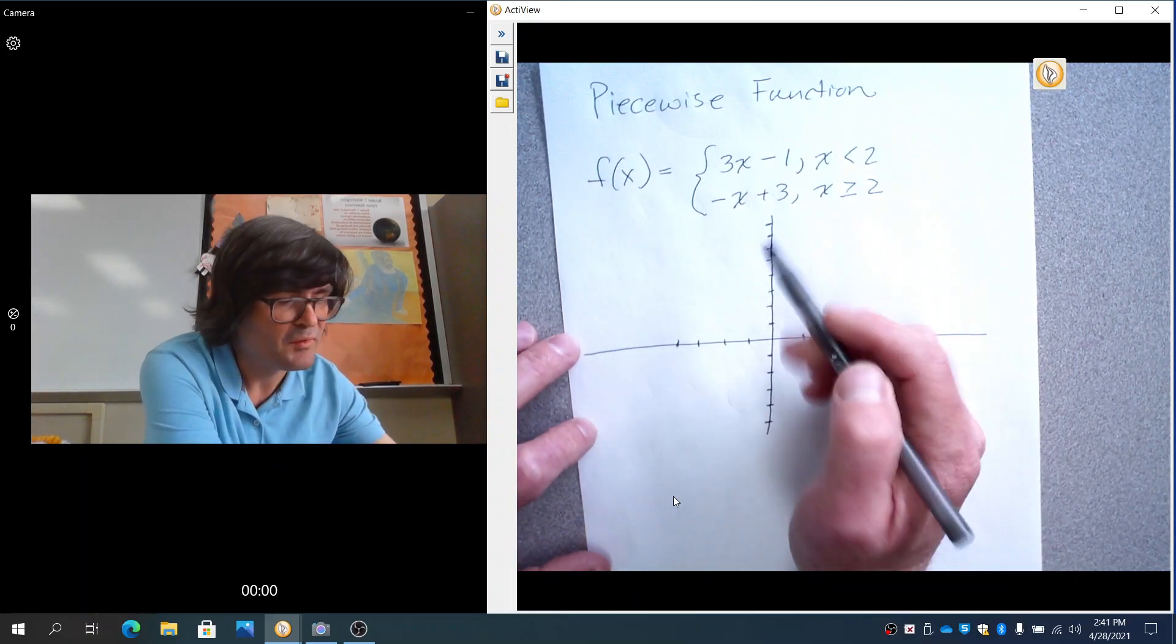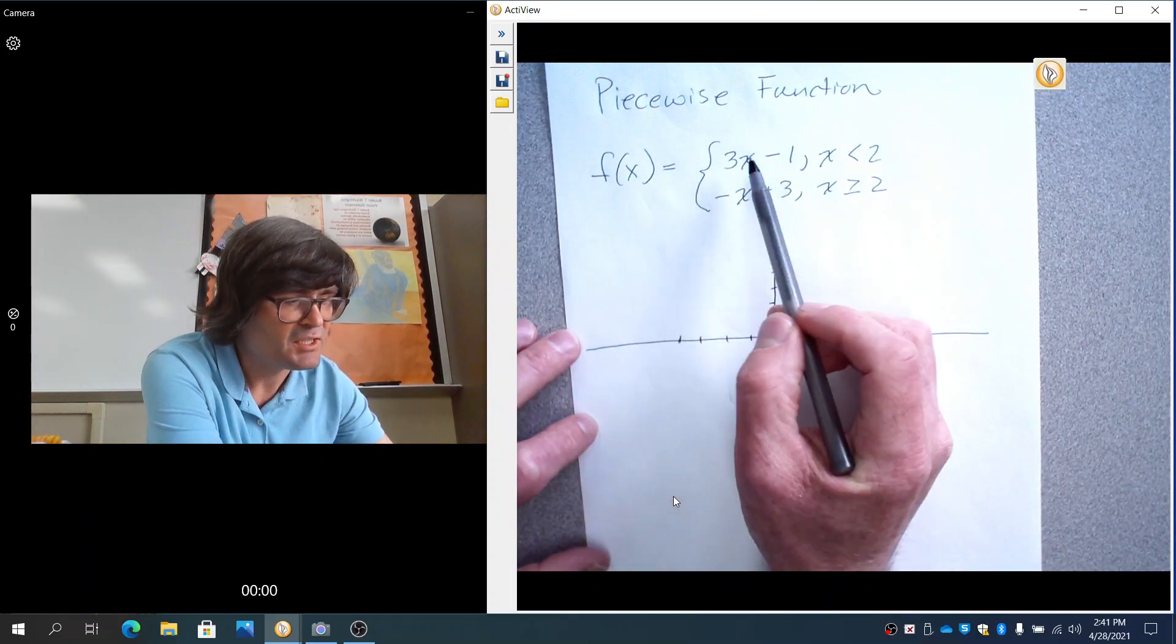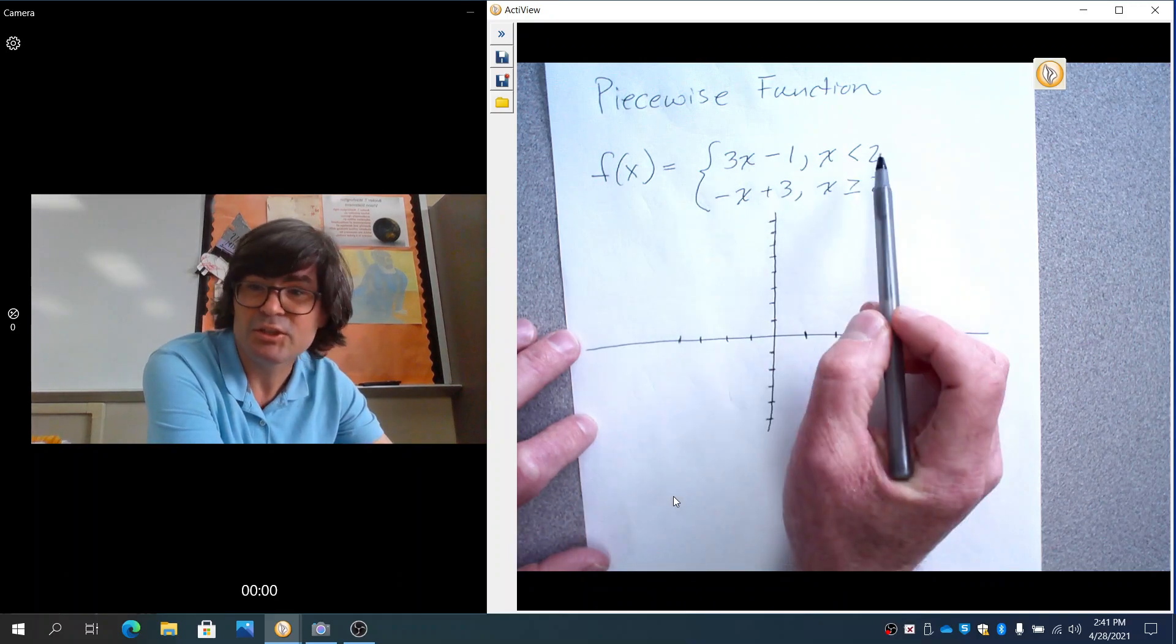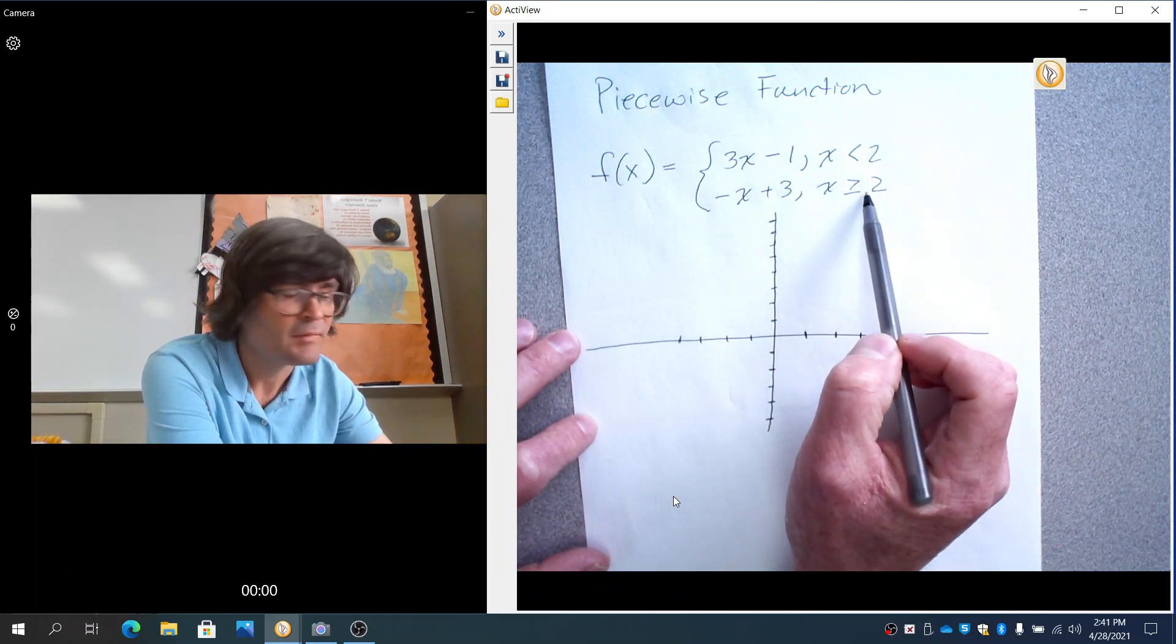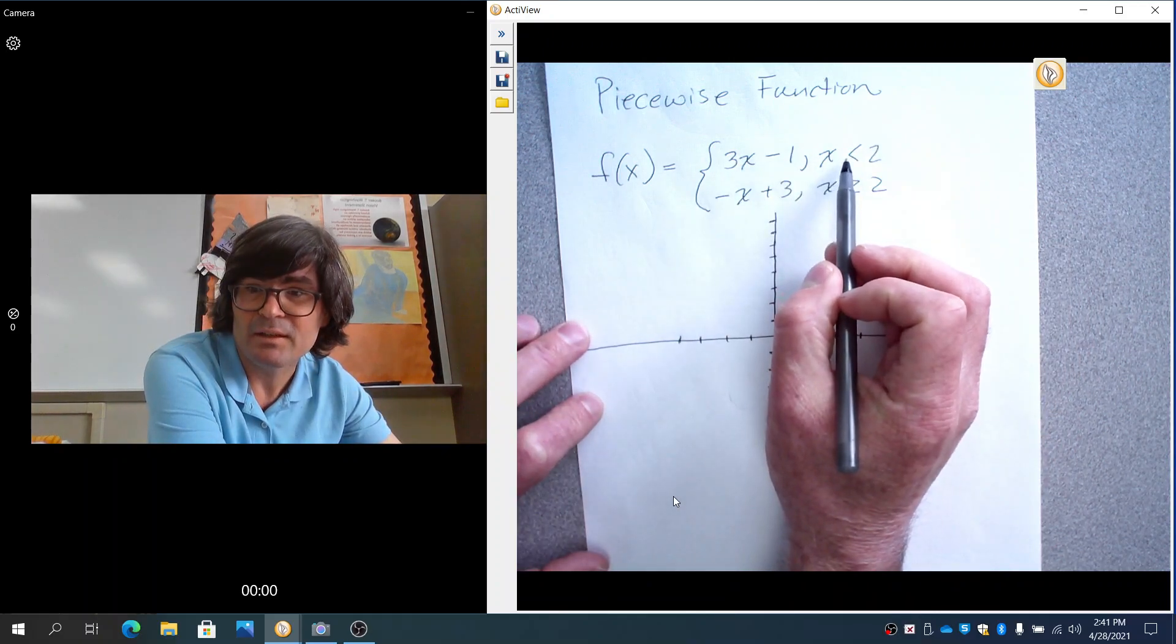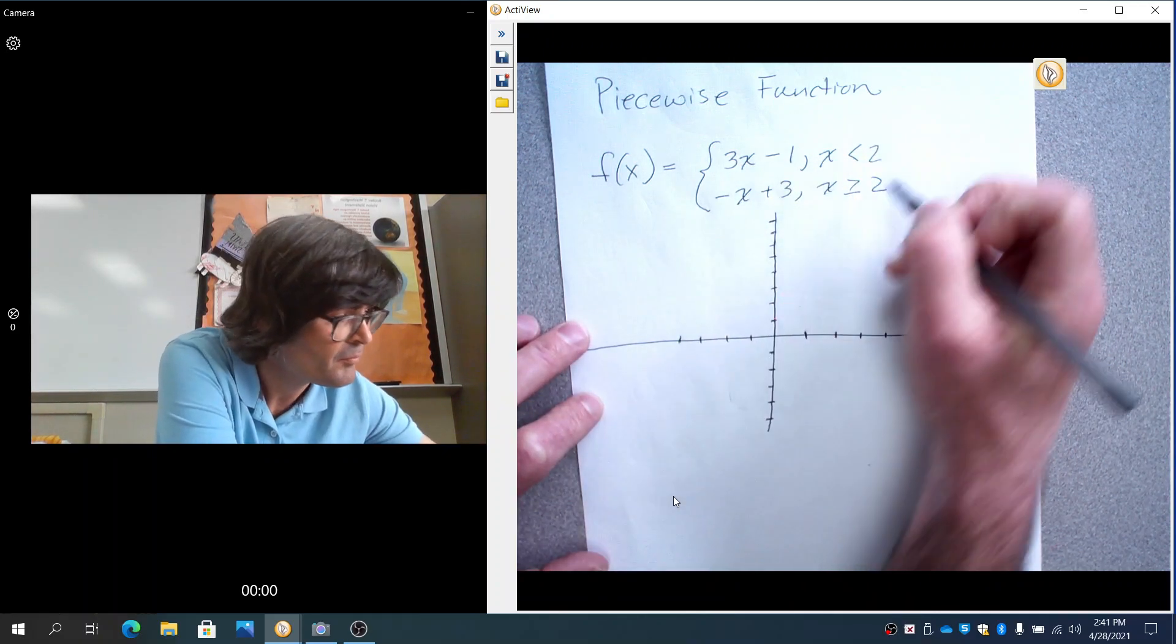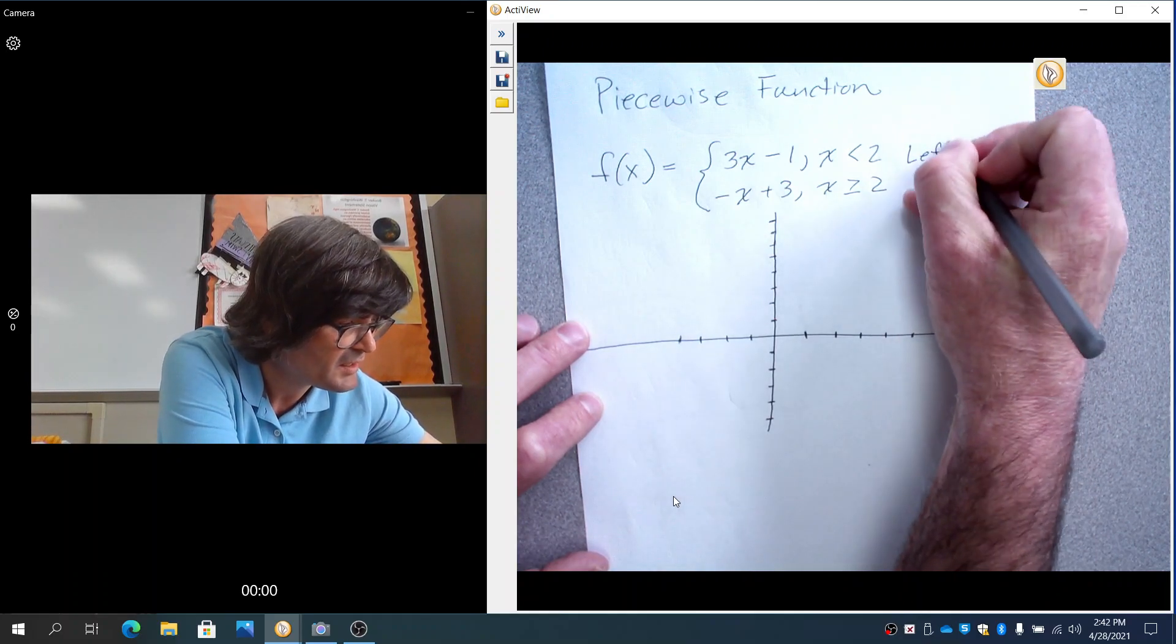Piecewise functions are a situation where you've got a function that basically changes how it looks at a certain value. This is what I call the transition value. And for this piece, x is left of 2, less than 2. I'm going to just label this as left.